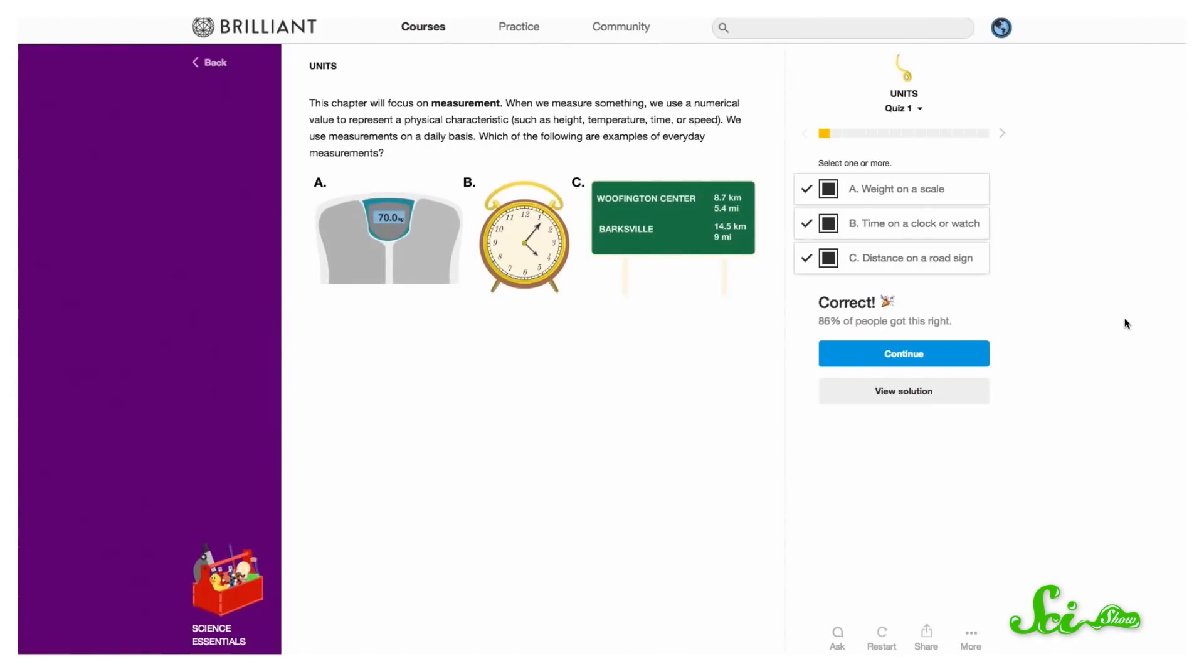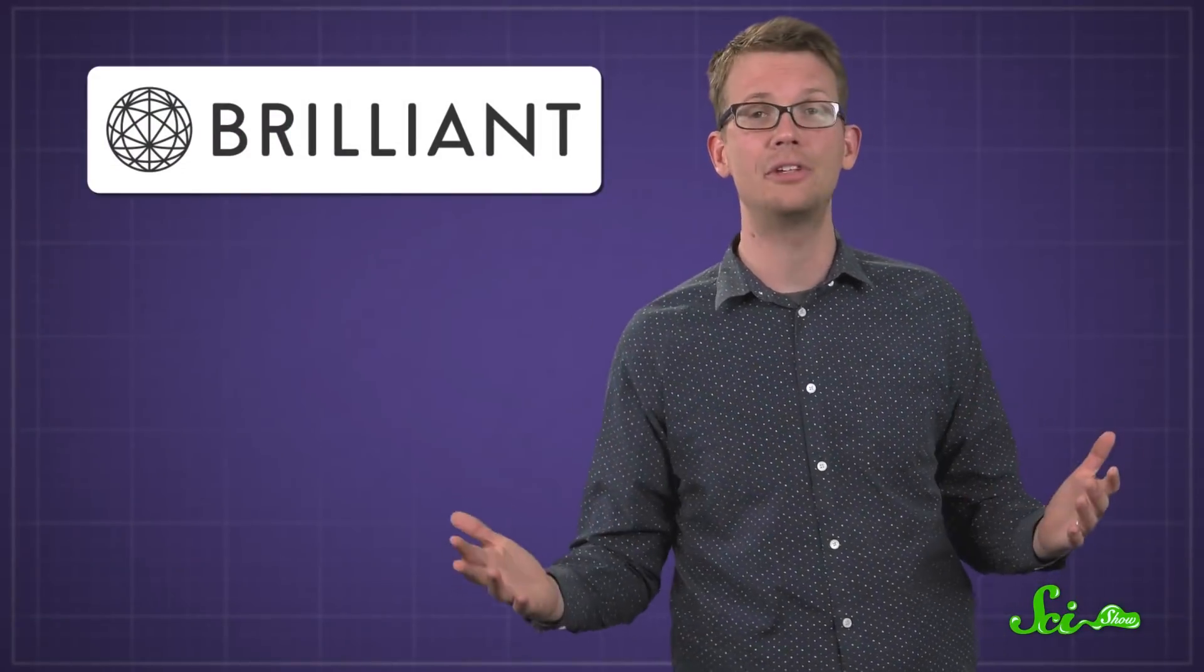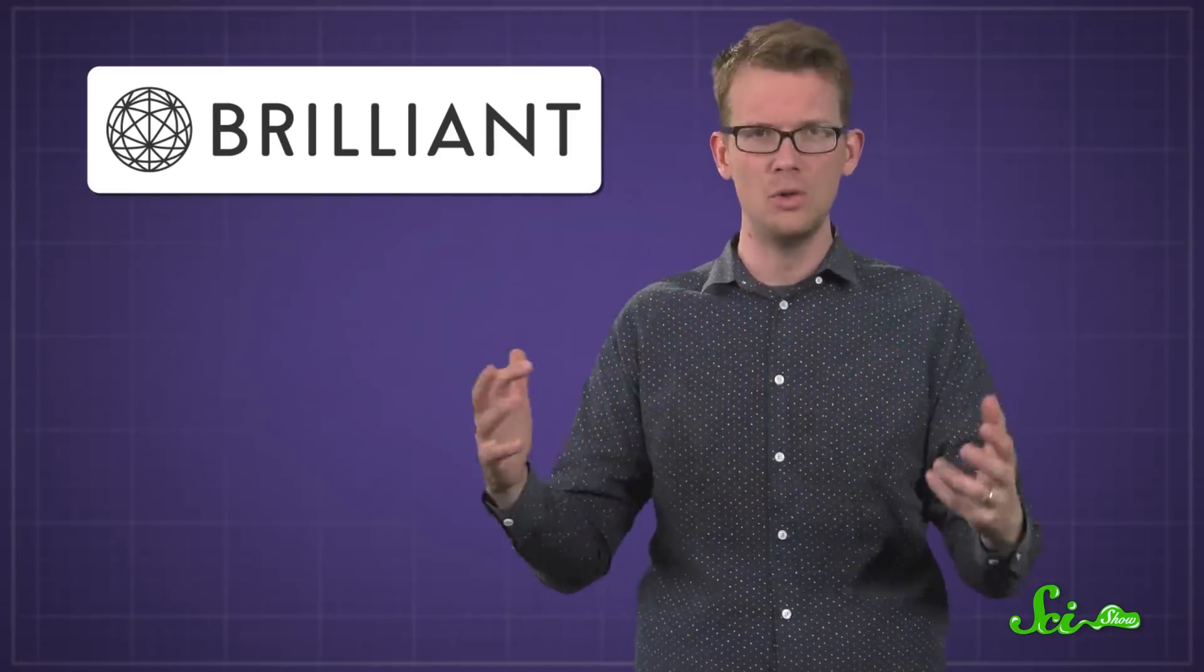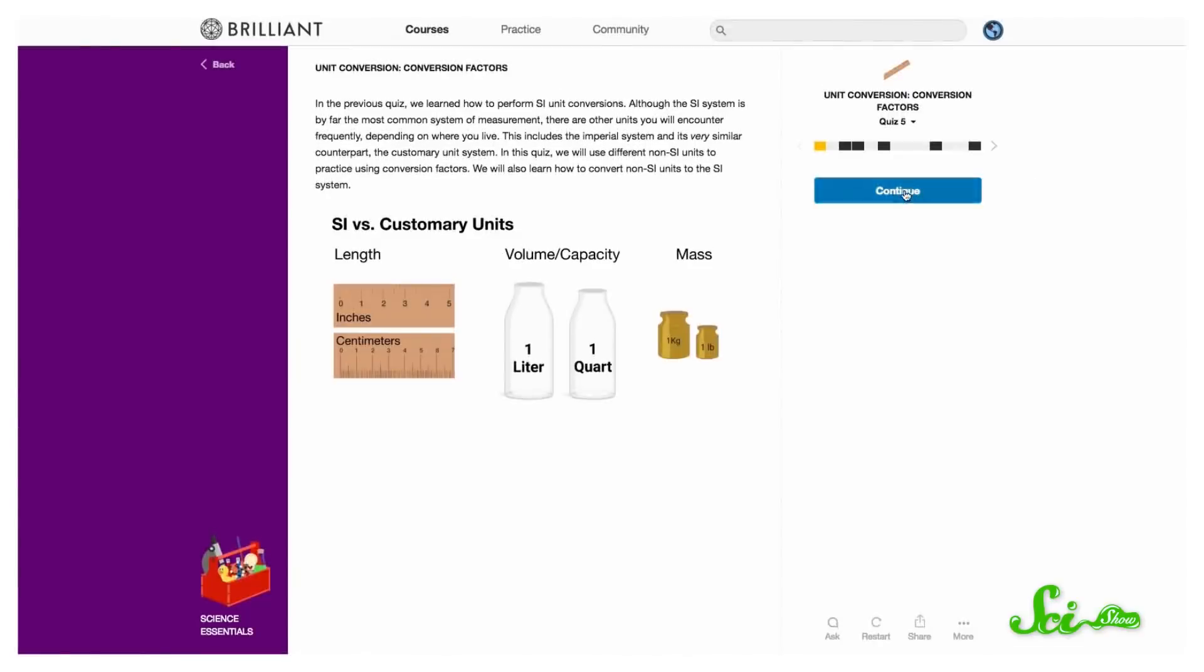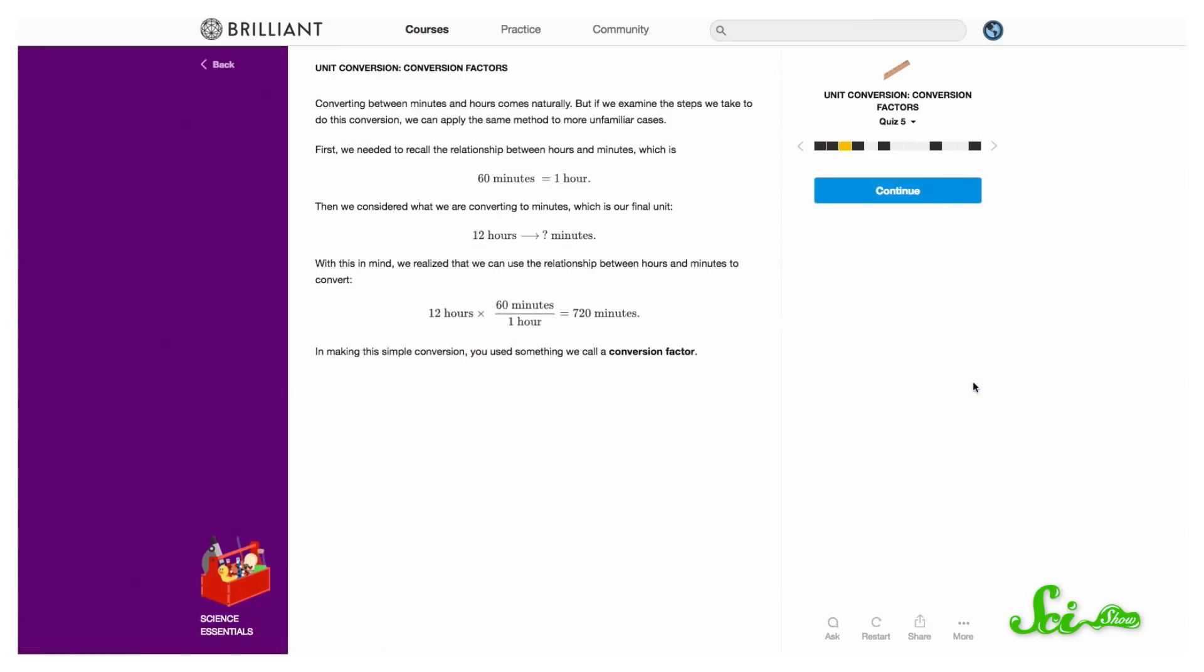We tend to think of measurements as fixed, which is why they're useful, but talking about a big cake or a long night is relative to your experience. Brilliant.org has tons of courses and quizzes that allow you to practice your math skills, but what's unique to Brilliant is that they treat each topic with nuance. You'll definitely get better at always using units when talking about measurements after taking this interactive course. But you'll also just understand the world in a more complex way.